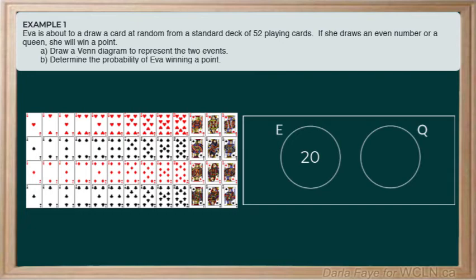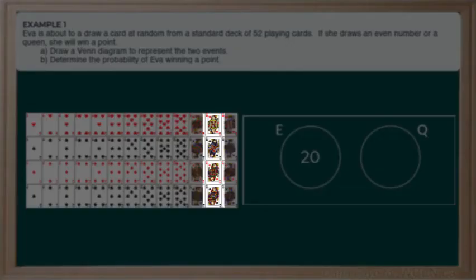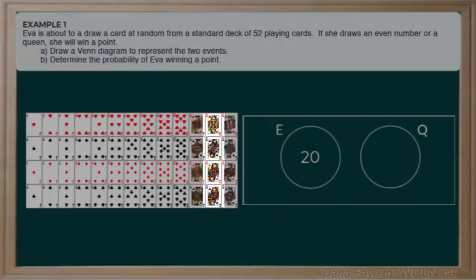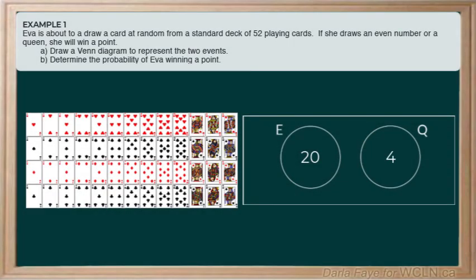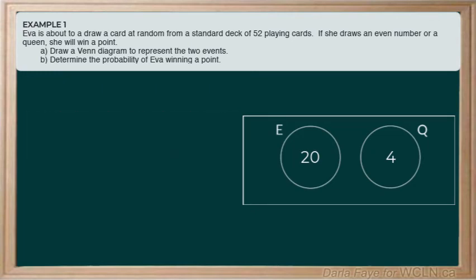For event Q, we know that there are four queens in a deck, one in each suit. So there are four favorable outcomes for this event. Now that we've got our Venn diagram filled in, it's going to be easy for us to tackle part B.